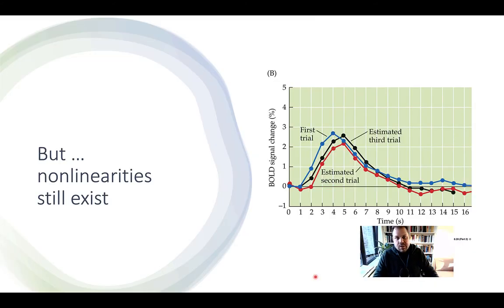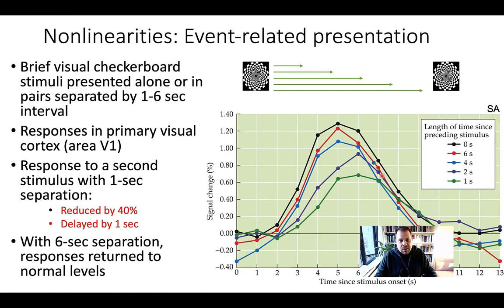If you decide to go with event-related designs, it's important to note that non-linearity still exists. This was suggested by a previous study that estimated the second and third trial via subtraction and found somewhat non-linear effects, in that these estimated BOLD responses do not entirely overlap with the first trial or a single trial response — especially when stimuli were separated by just two seconds. A follow-up study by Utel and colleagues presented visual checkerboards separated by either one, two, three, four, five, or six seconds.